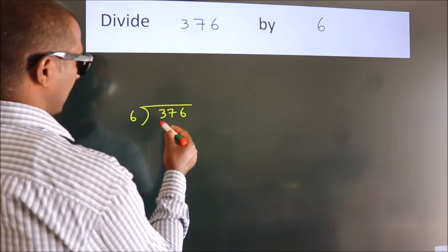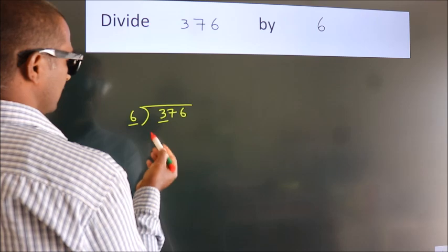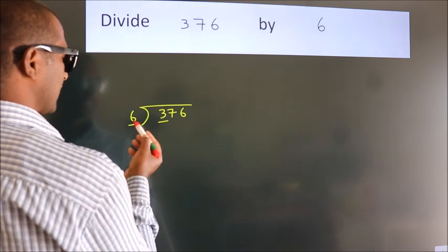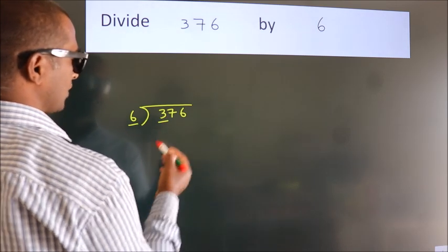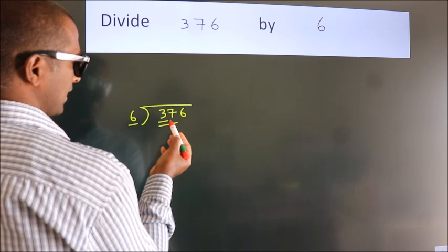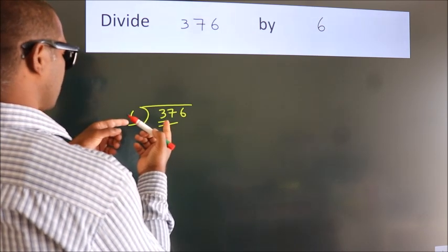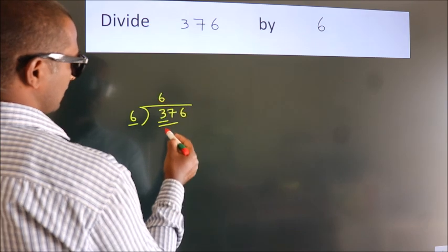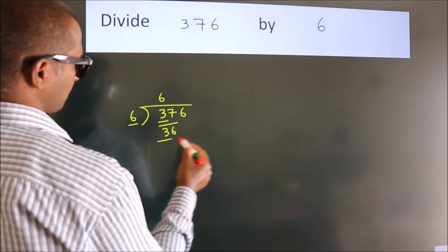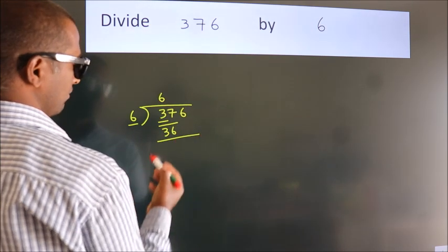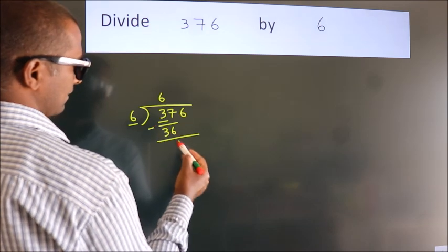Next, here we have 3, here 6. 3 is smaller than 6, so we should take two numbers: 37. A number close to 37 in the 6 table is 6 times 6, 36. Now we should subtract. We get 1.